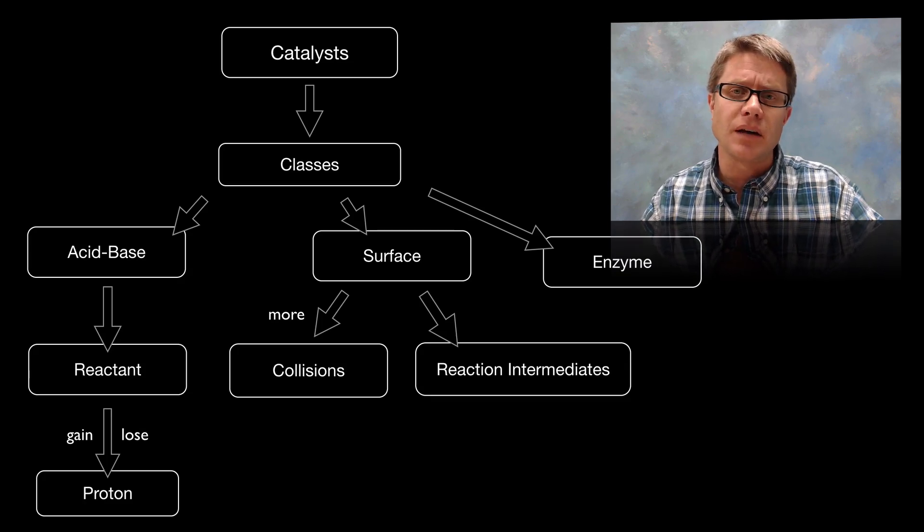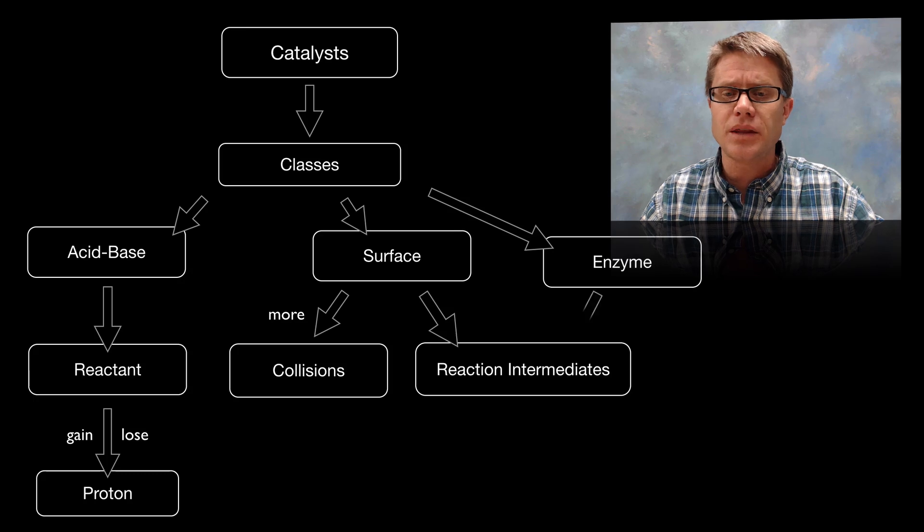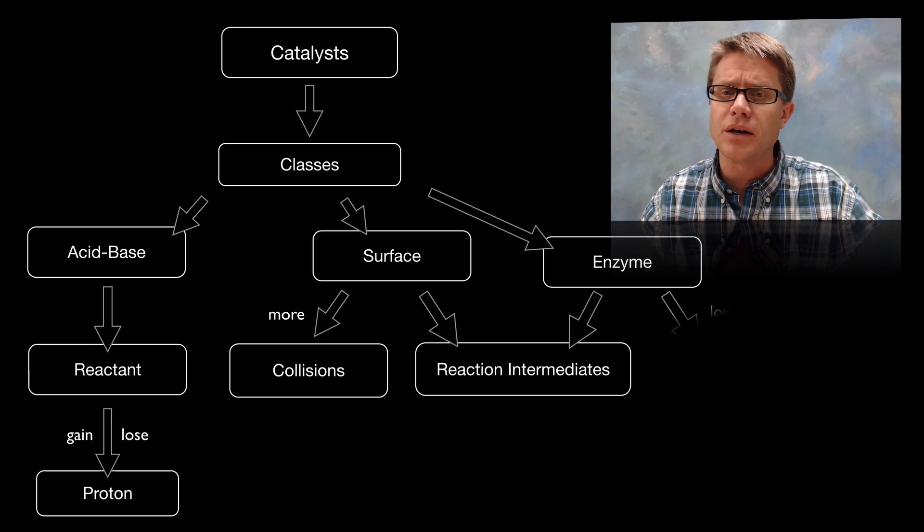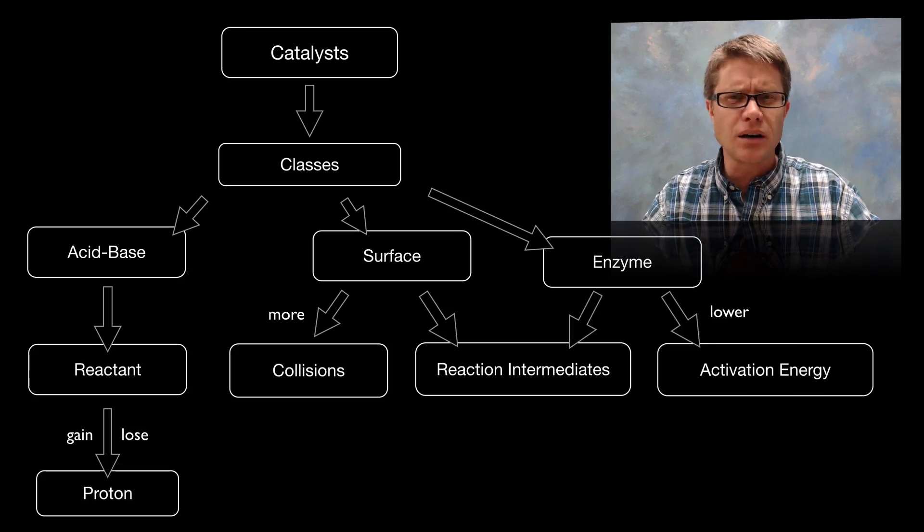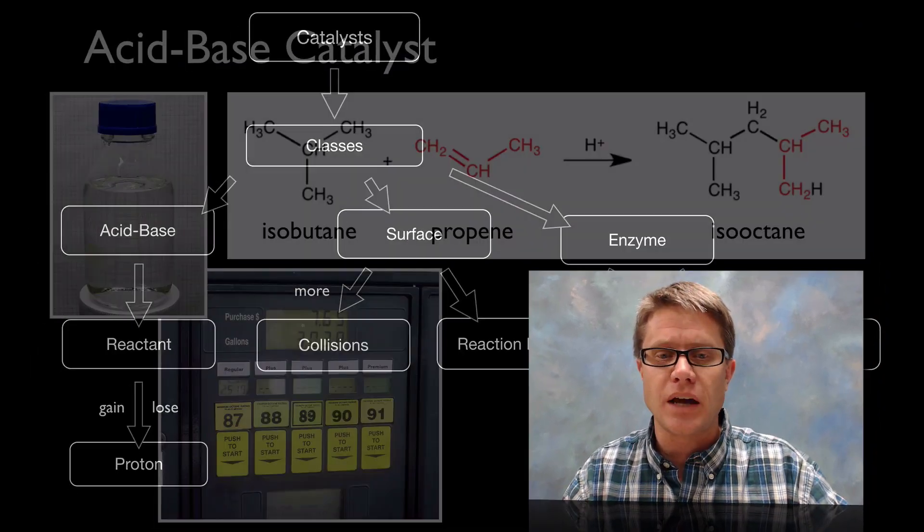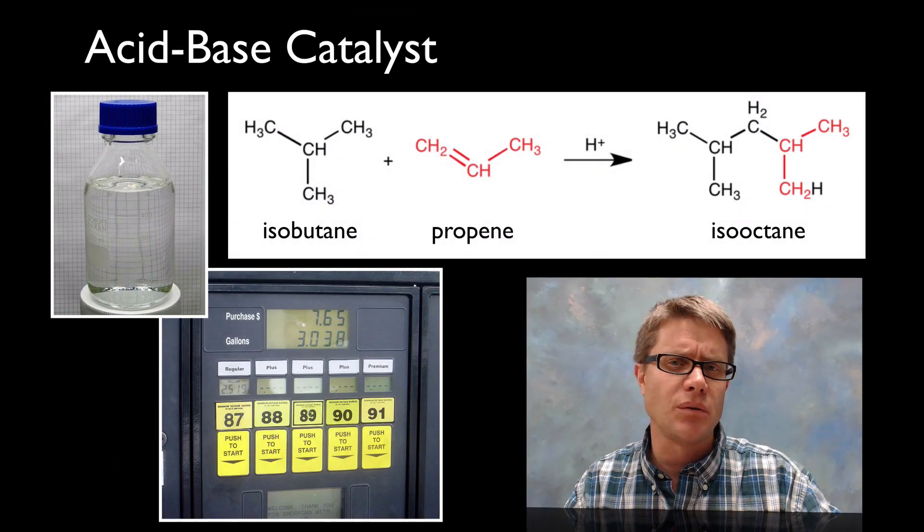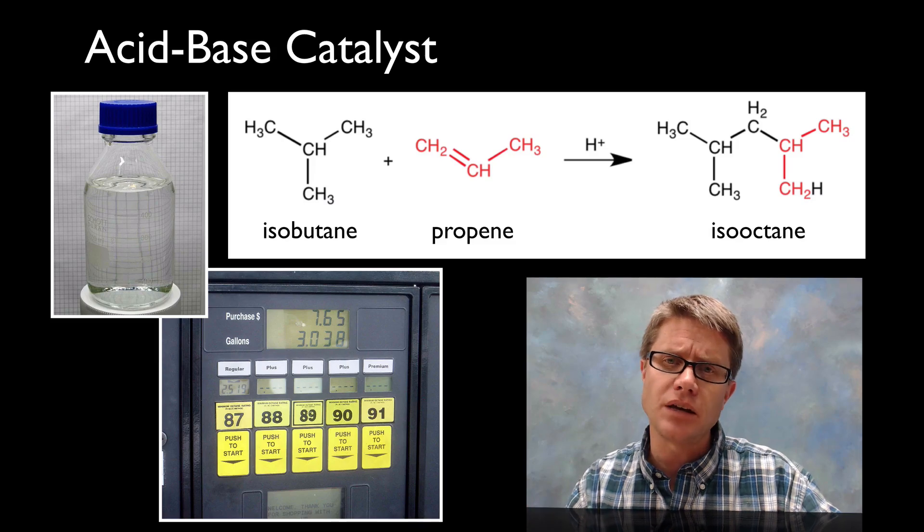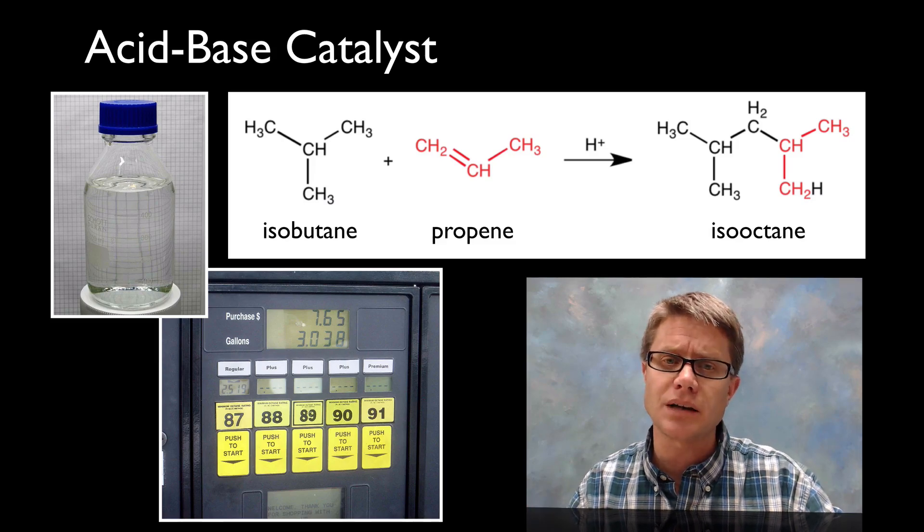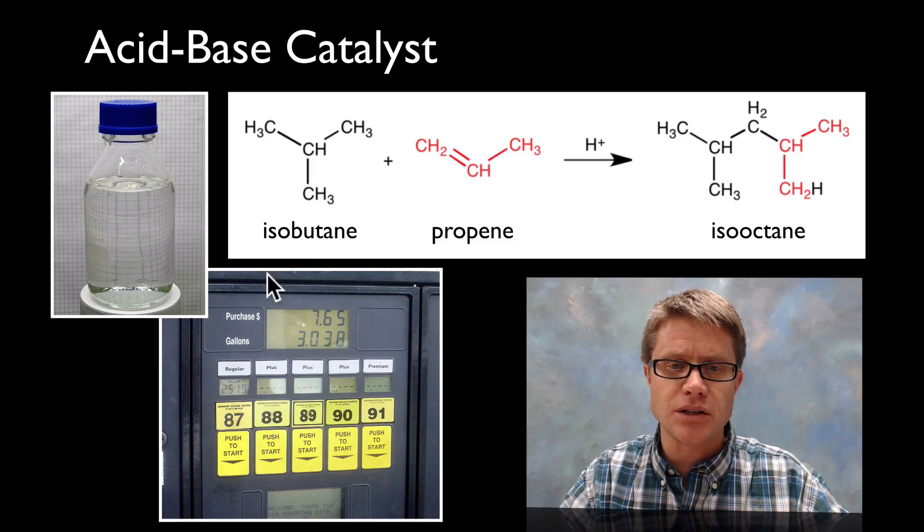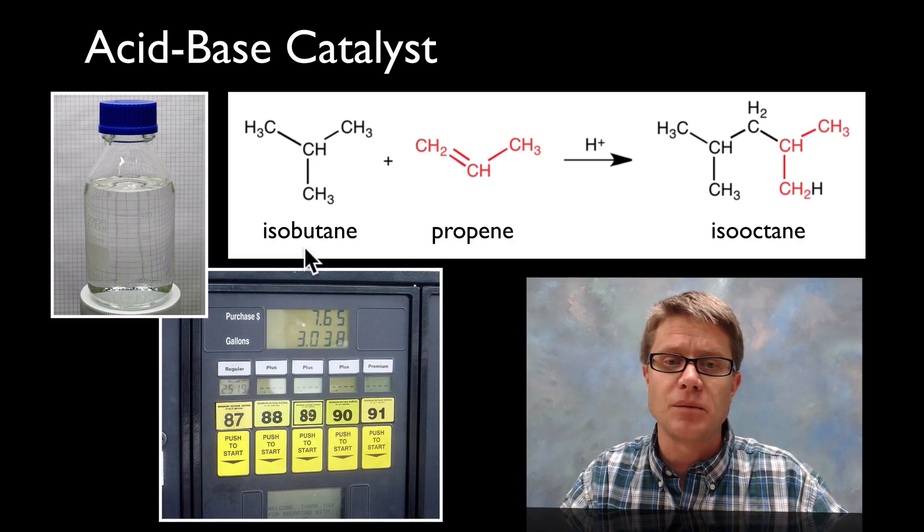And then finally we have enzymes. Those are the biological catalysts, and what they can do is also produce new intermediates or they can simply tug on a molecule and they can lower its activation energy. So let's start with an acid base catalyst. What these are doing remember is adding a proton or taking a proton away from one of those reactants. And here's an example of a reaction that is catalyzed by an acid base catalyst.